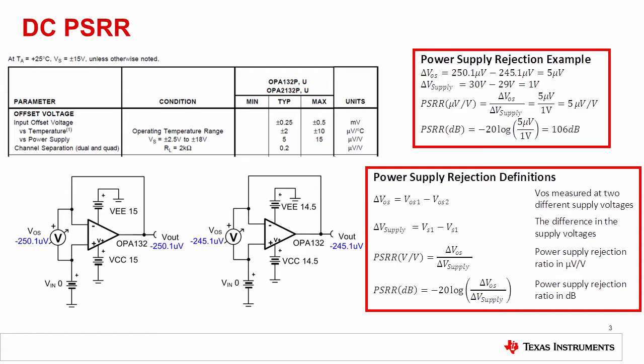The datasheet table provides a typical and maximum DC power supply rejection, abbreviated PSRR. Later, we will look at the characteristic curves to show the AC PSRR. Note that PSRR can be given in volts per volt, microvolts per volt, or in dB.